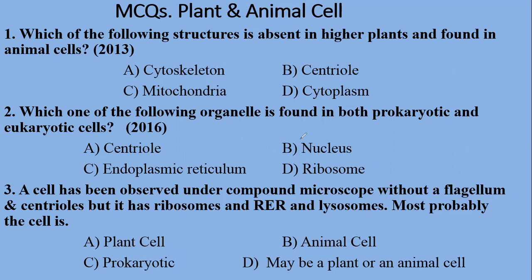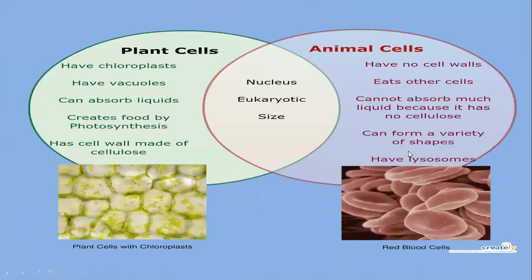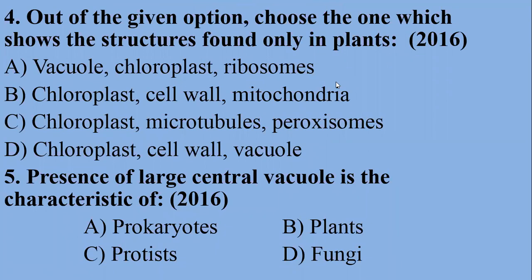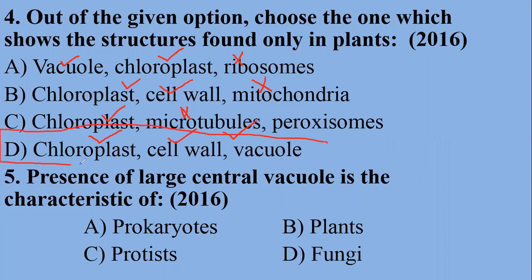Question 4: choose the option showing structures found only in plants. Vacuole — yes, large vacuole is found in plants. Chloroplast — yes. Ribosomes — no, they are found in both types of cells. Chloroplast and cell wall — yes. Mitochondria — no. Chloroplast, cell wall, and large vacuole together — this is the best option. Since vacuoles can be in both cells but we are generalizing, the delta option — chloroplast, cell wall, and large vacuole — is the most suitable and correct answer.